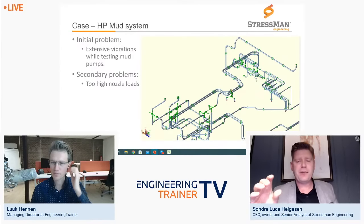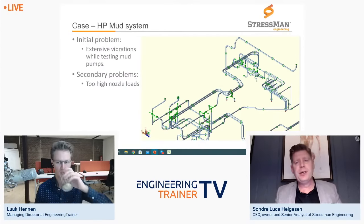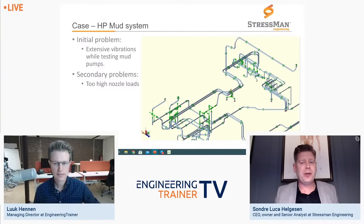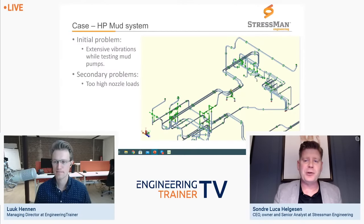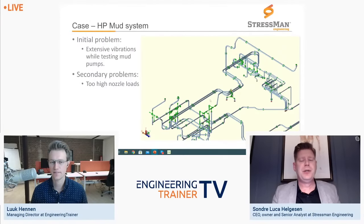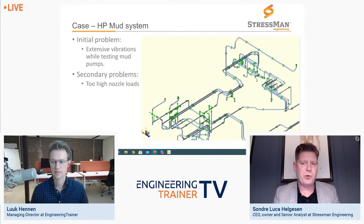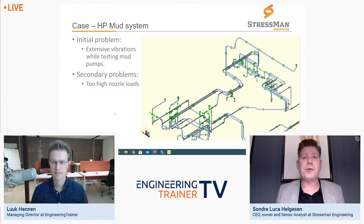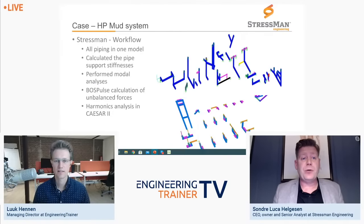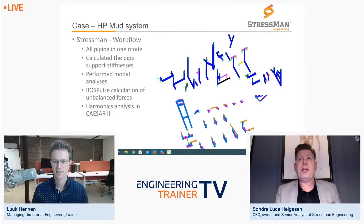Since the system was already built, we tried to avoid changing the pipe routing — cutting open these pipes again would require retesting, which would be very expensive. We managed to keep the same routing but had to change some of the supports. When we started looking at it, we found very high nozzle loads compared to what was specified by the equipment vendors.